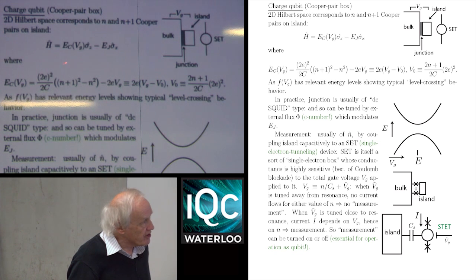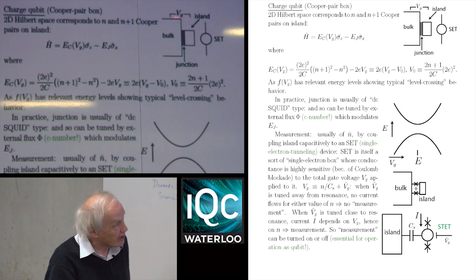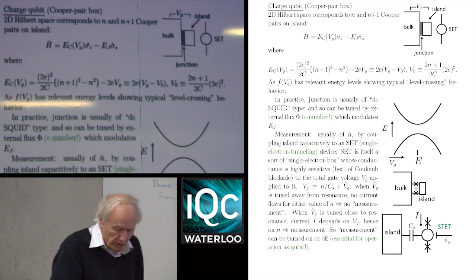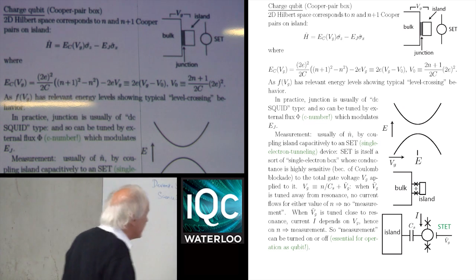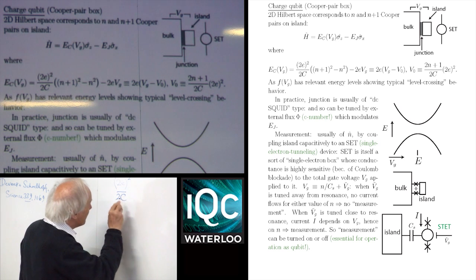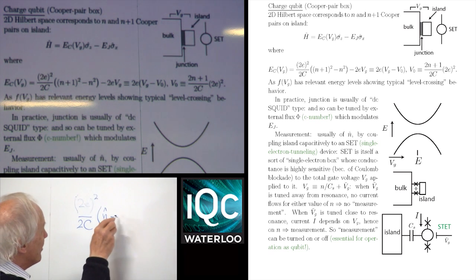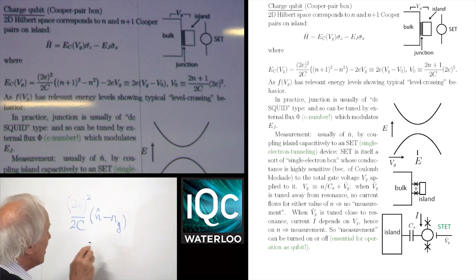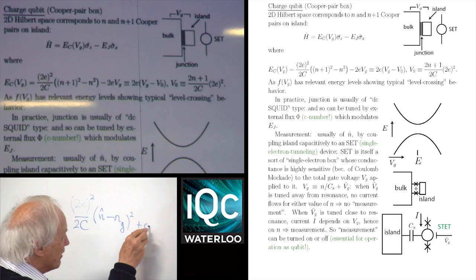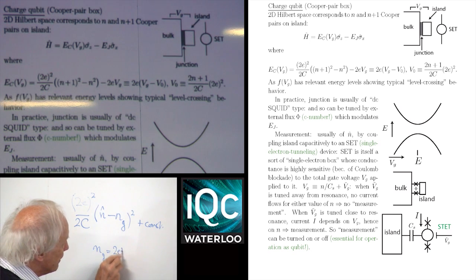The capacitance energy consists of, first of all, the intrinsic capacitance energy due to the transfer of charge across the junction, plus a term due to some gate voltage you may apply between the bulk and the island. This is often written in the literature as: 2e² over 2C, times the number of Cooper-pairs on the island minus N_G squared, plus a constant, where N_G is given by 2eV_G over C.